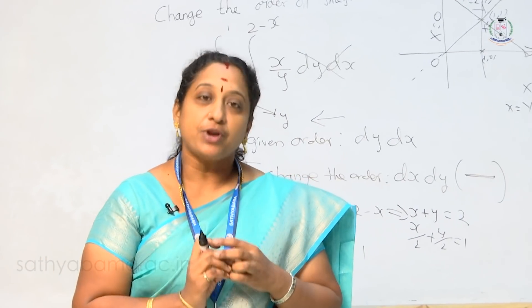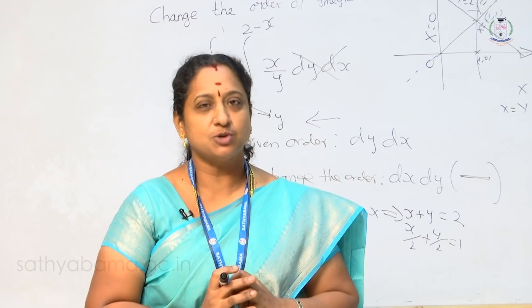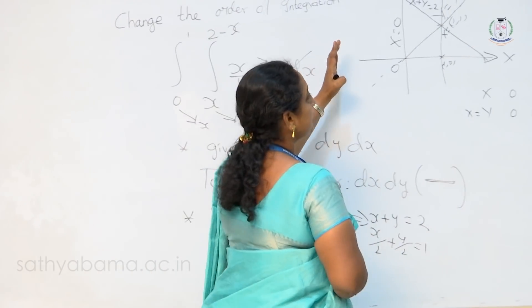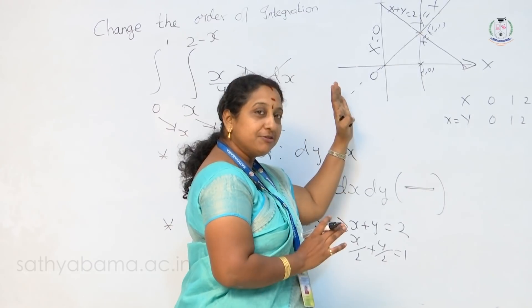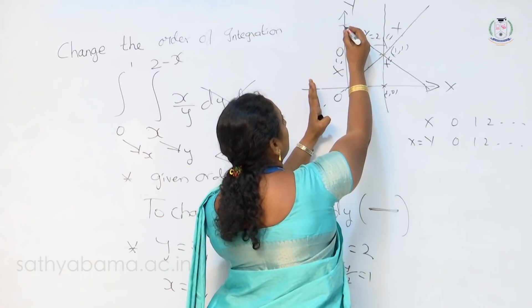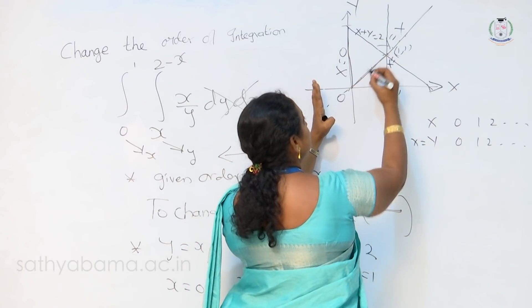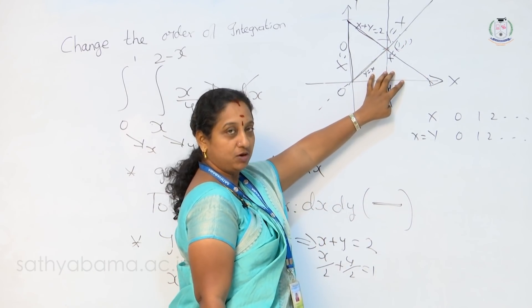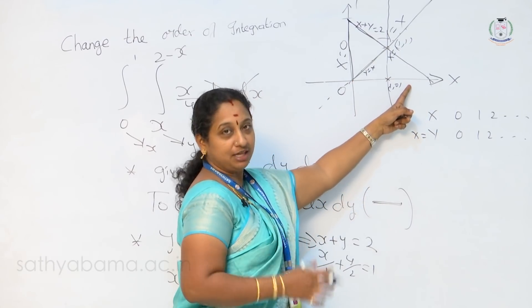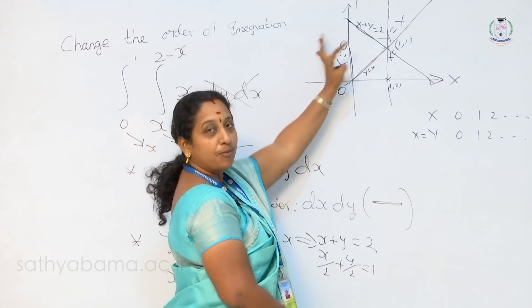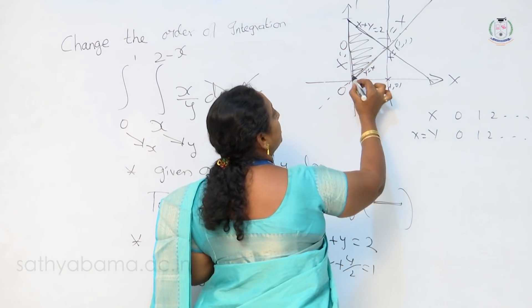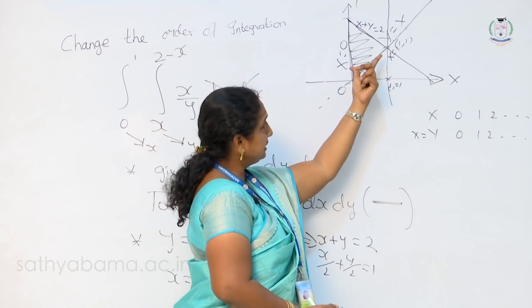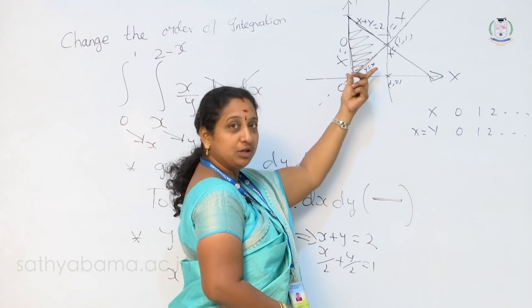Before identifying the limits, first identify the bounded region — it should be bounded on all sides. Look into the diagram. x is equal to 0 on one side, y is equal to x on another side, x plus y equal to 2 on another side. We are not supposed to consider the full triangle, since y is equal to 0 is not given. Therefore that side is unbounded. We have to consider only the bounded region — this is the region of integration. For that we have to identify the new limits.